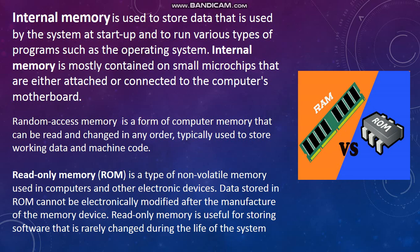First, internal memory. Internal memory is used to store data that is used by the system at startup and to run various types of programs such as the operating system. Internal memory is mostly contained on small microchips that are either attached or connected to the computer's motherboard.